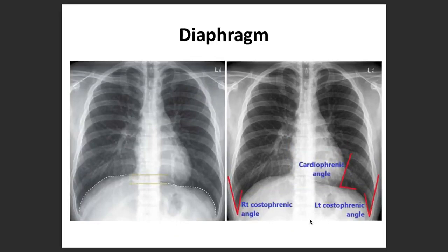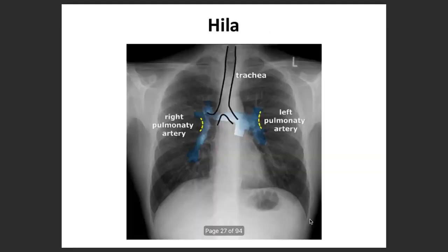Now coming to the diaphragm. You may notice that the right side is higher than the left side. This is where we find the left costophrenic angle and the right costophrenic angle. The hilum is where the trachea branches into the pulmonary artery branches on the left and right sides.